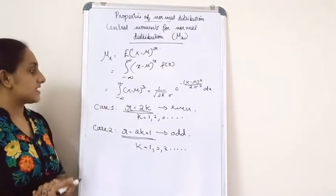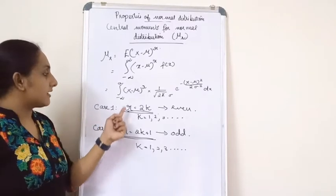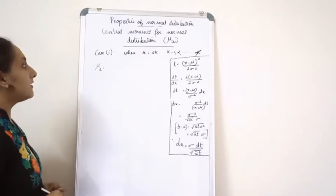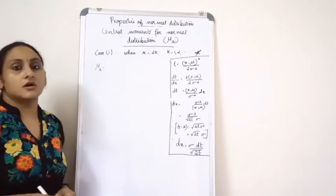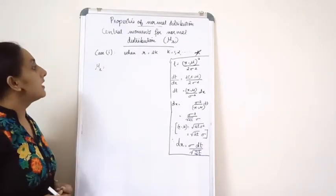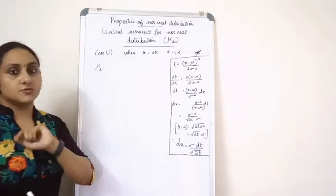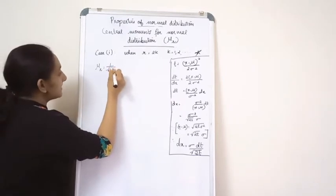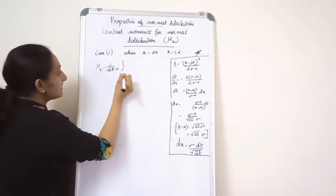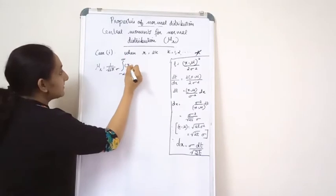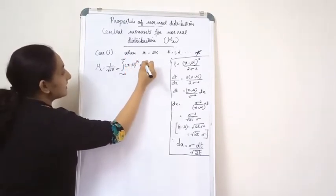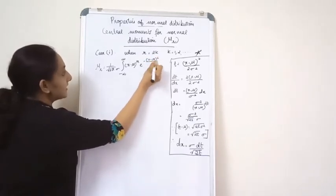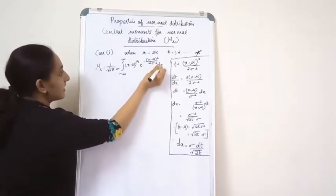First we look at case 1, when r is equal to 2k. Mu_2k is equal to 1 by root 2 pi sigma, integral minus infinity to infinity, x minus mu the whole raised to 2k, e raised to minus x minus mu the whole square divided by 2 sigma square dx.